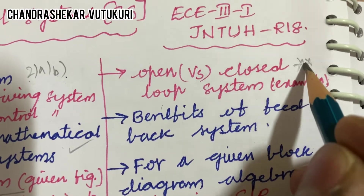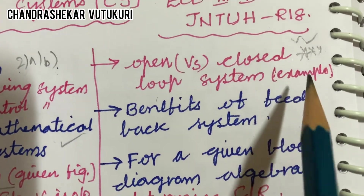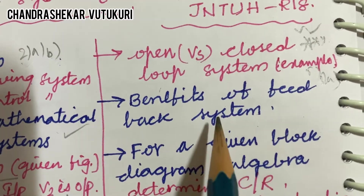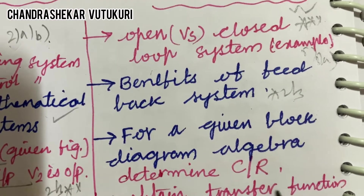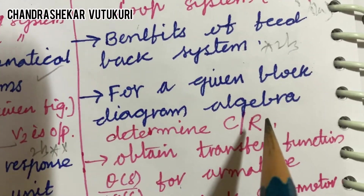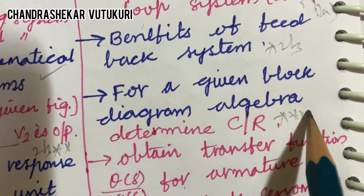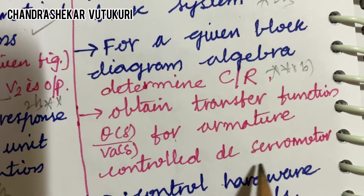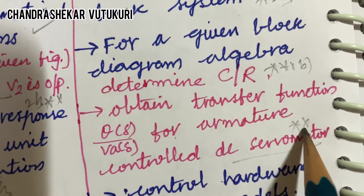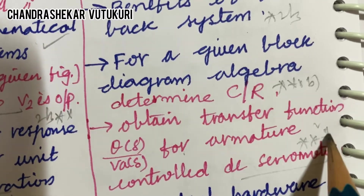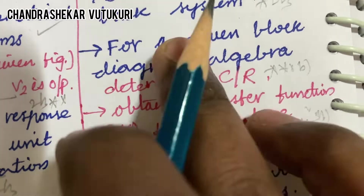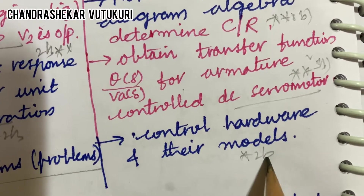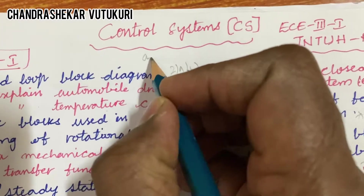Compare open loop system versus closed loop system — this is said to be a topmost question which is repeatedly asked. We can expect this for a 5-mark question in 3a, along with examples. Benefits of feedback system may be a 2-mark or 3-mark question. For a given block diagram, algebraically determine C/R — this may be a lengthy question. Obtain transfer function for a given relation for armature-controlled DC servomotor, which is also a topmost question that may appear in 3b. Controlled hardware and their models may be a 2-mark or 3-mark question.